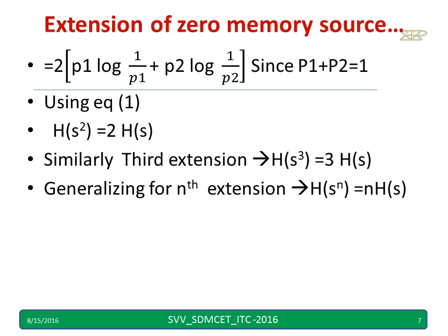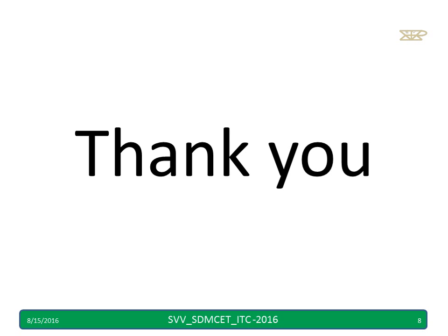Similarly, the third extension gives H(S³) = 3·H(S). Generalizing, the nth extension gives H(S^n) = n·H(S). You can rewind and read it again. Your suggestions are welcome — thank you.